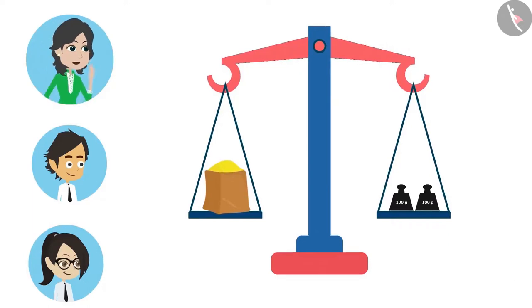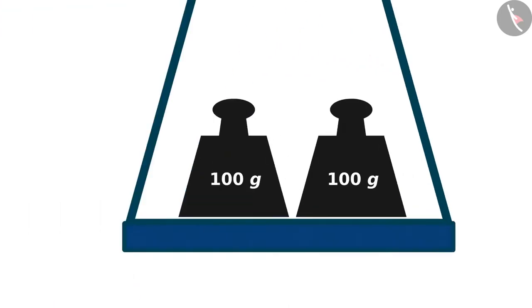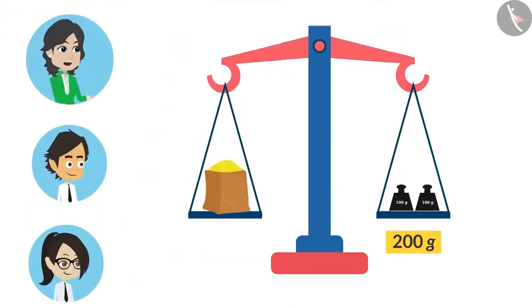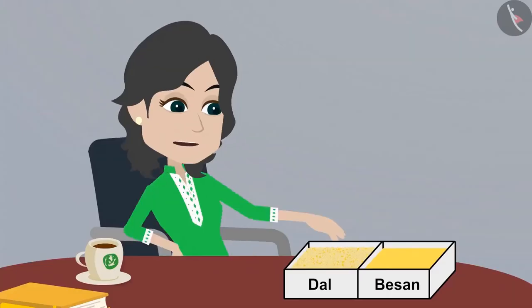When both sides are equal, we calculate the weights added. The weight of the item is the same as the weights added. The weight of this Dal is 500 grams.